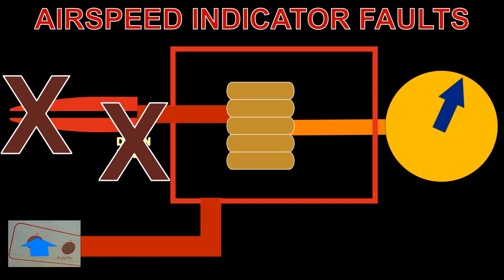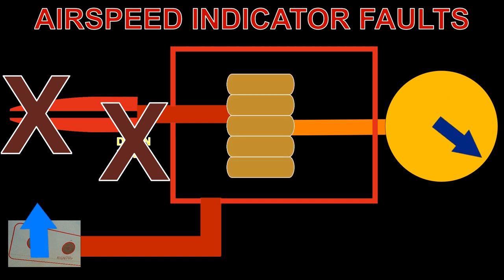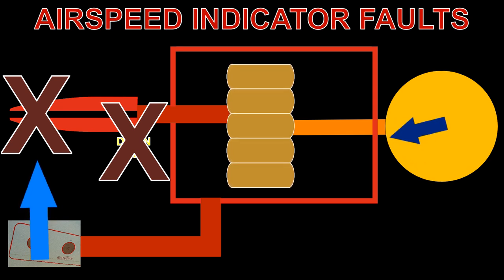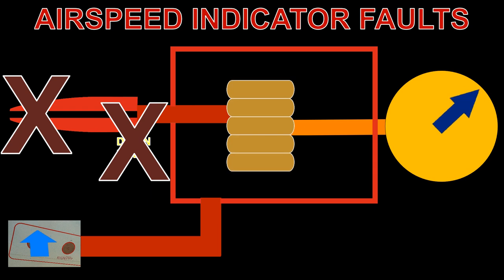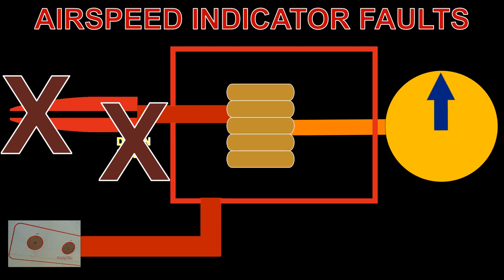However, the ASI pointer will show altitude changes as the associated static pressure changes. Effectively, the ASI becomes an altimeter. If both the pitot tube and the static system are blocked, the ASI pointer will read zero, as both pressures will become equal, as they are when stationary on the ground.